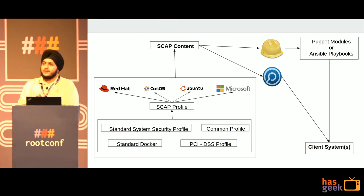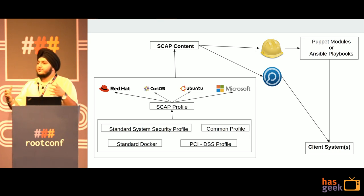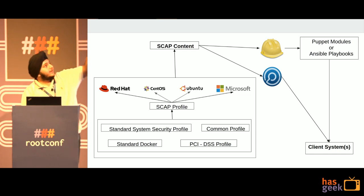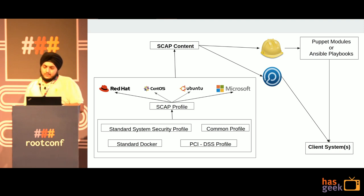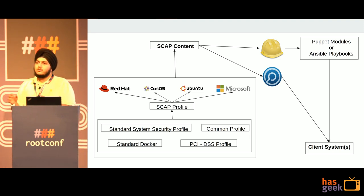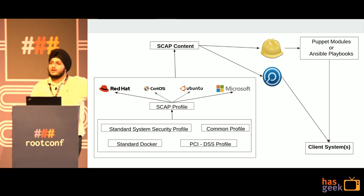Since OpenSCAP is an open source project, it needs the ability to integrate with other open source projects as well. This is where Foreman comes into the picture — in the diagram, the one with the helmet. With the help of Foreman, you can use Puppet, Ansible, Chef, Salt — anything — and then apply it on your client systems.